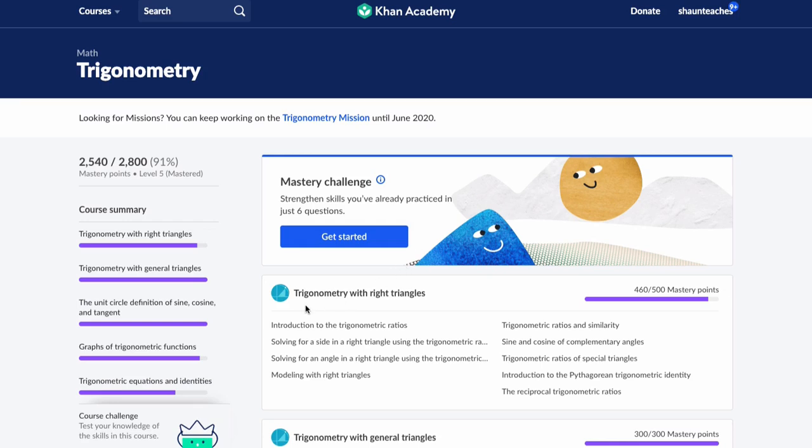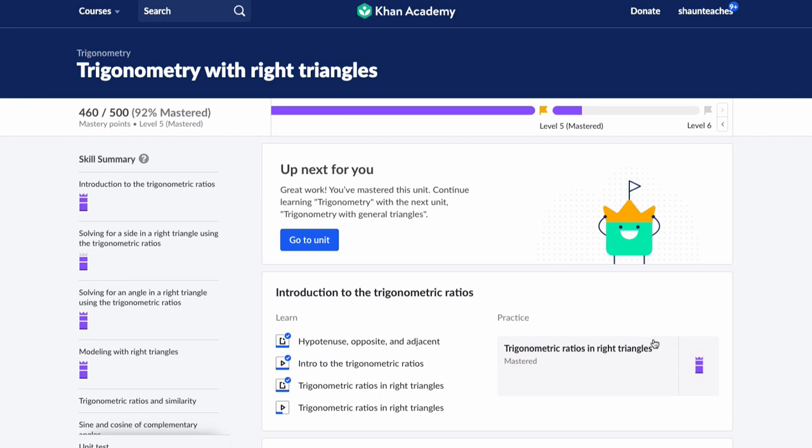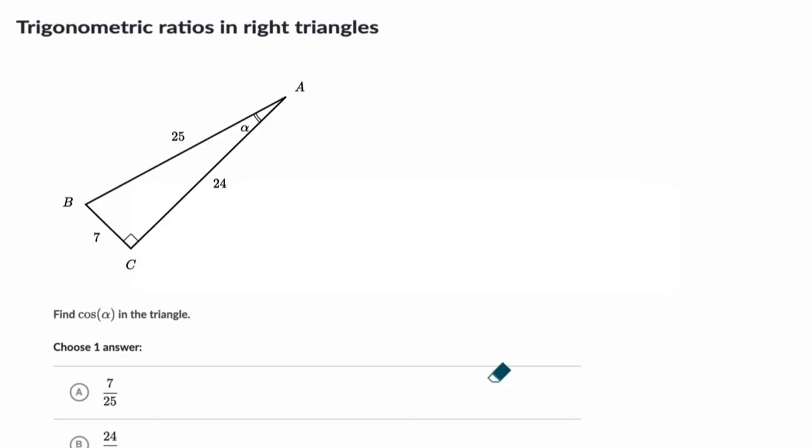Okay, so in this video we are looking at trigonometry with right triangles, and we're specifically looking at this practice problem: trigonometric ratios in right triangles. I want to show you how to work through these problems. In each of these problems, they give you a triangle and tell you to find a trig ratio. In this case, you're looking for cosine.